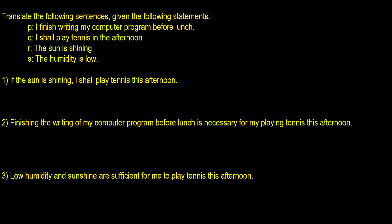The first sentence is: 'If the sun is shining, I shall play tennis this afternoon.' We have two statements: the sun is shining, and I shall play tennis this afternoon. This is an if-statement, so if R — the sun is shining — then Q — I shall play tennis this afternoon. So the translation is R arrow Q.